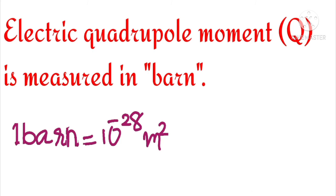The electric quadrupole moment is measured in units of barns, where one barn equals 10 to the minus 28 meters squared. The typical range of Q is from minus 1.2 to 7 barns — a relatively small range — indicating that the nucleus is approximately spherical in shape.